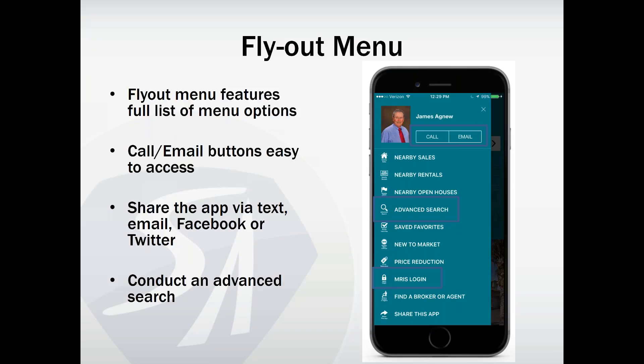The flyout menu is accessed in the upper left-hand corner on the main menu. It features a full list of menu options with call and email buttons at the top, right under the agent's name and photo — really easy to access, reinforcing the client to call and email. You can also access all menu buttons, advanced search, and login from here.